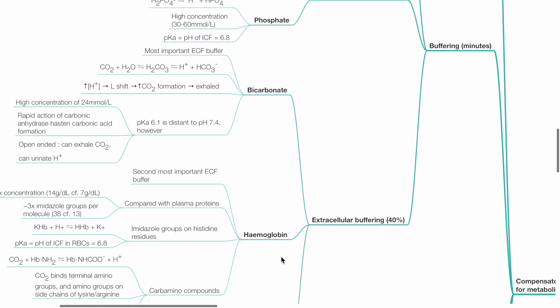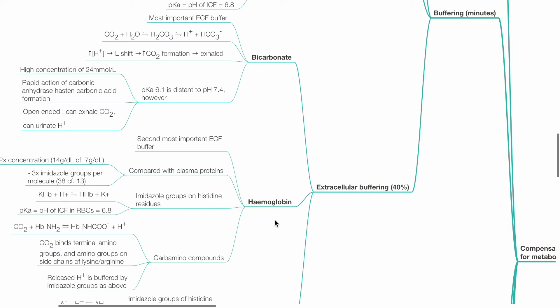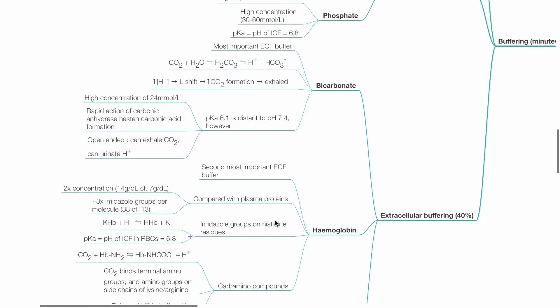Extracellular buffering consists of bicarbonate, hemoglobin and plasma proteins. Bicarbonate is the most important ECF buffer.